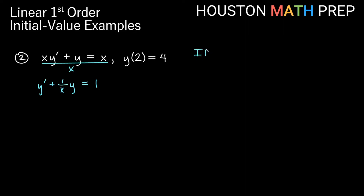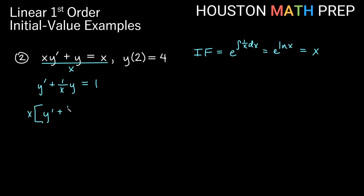Our integrating factor is e to the integral of p. Our function p is now one over x, so e to the integral of one over x dx. The integral of one over x is just the log rule, giving us e to the ln x, and e to the ln of something is just that something. So our integrating factor is x, and we'll multiply the entire equation by that: x times y prime plus one over x times y equals 1.